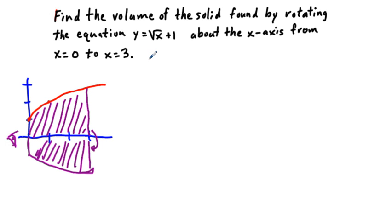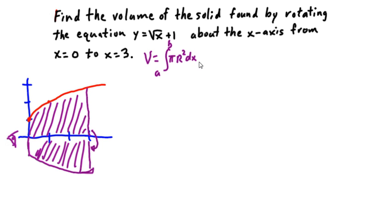So let's set this up. Again, volume equals the integral from a to b of pi r-squared dx. In this instance, we're going to have pi, from 0 to 3, of the quantity square root of x plus 1, squared, dx.